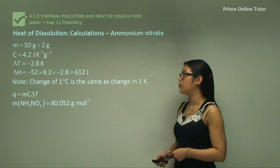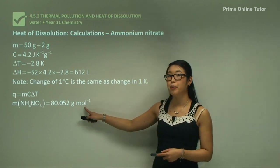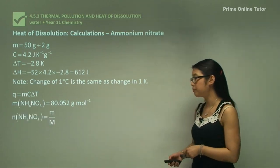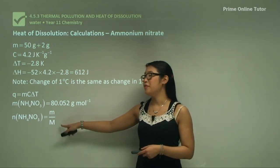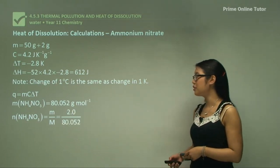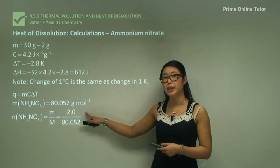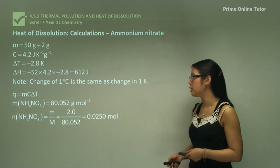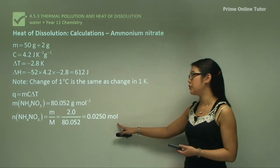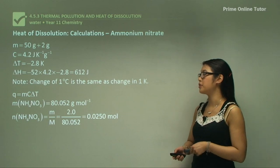The equation uses delta T in Kelvin, and that's okay because one degree change is one Kelvin change. So we use Q equals m C delta T. The molar mass of ammonium nitrate is 80.052 grams per mole. So we had 2 grams that we measured out, divide this by the molar mass, and we get the number of moles at 0.025 moles.